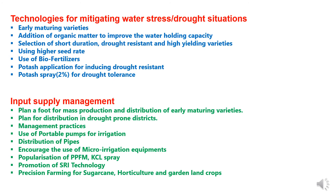The third component is technologies for mitigating water stress and drought situations. Under such situations, we have to adopt early maturing varieties which need a shorter water irrigation period, and because of early maturity we can mitigate the risk and escape the drought condition at the last stage of crop requirement. Addition of organic matter to the soil improves water holding capacity and retention capacity, so moisture will be available for a longer period.